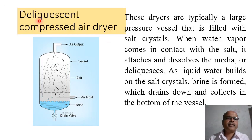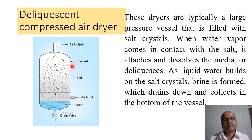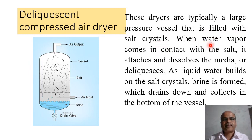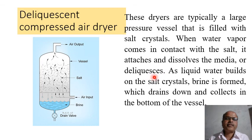Deliquescent compressed air dryer: The diagram shows air input, a vessel filled with salt crystals, and a drain valve. These dryers are typically a large pressure vessel filled with salt crystals. When water vapor comes in contact with the salt, it attaches and dissolves the media — or deliquesces. As liquid water builds on the salt crystals, brine is formed which drains down and collects in the bottom of the vessel.